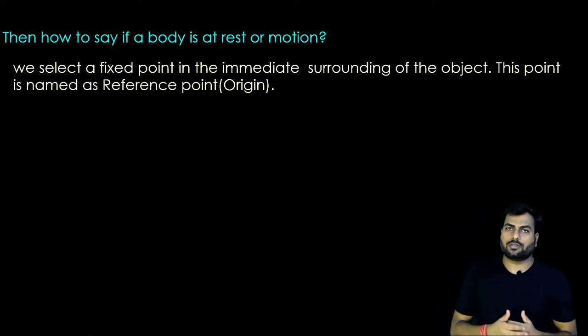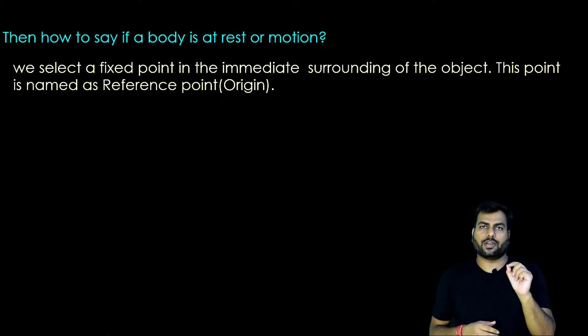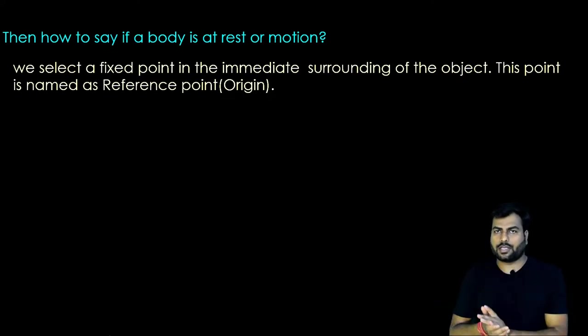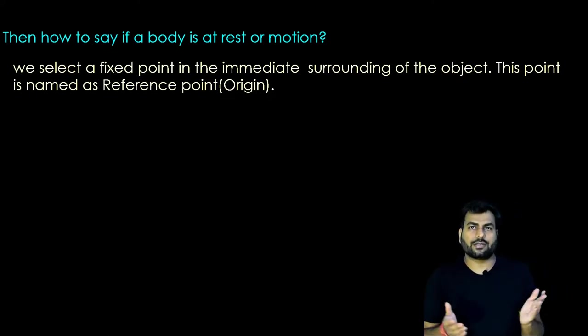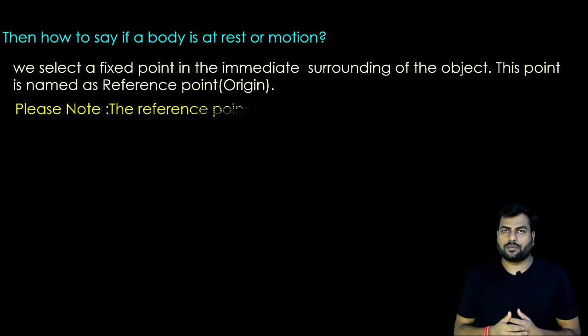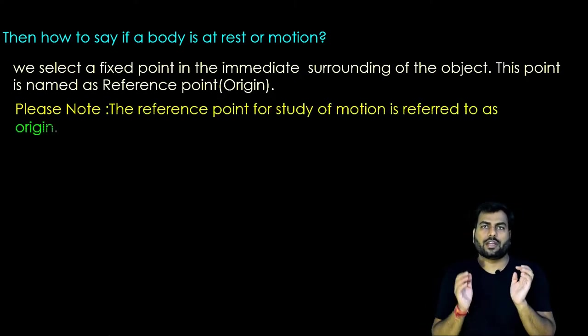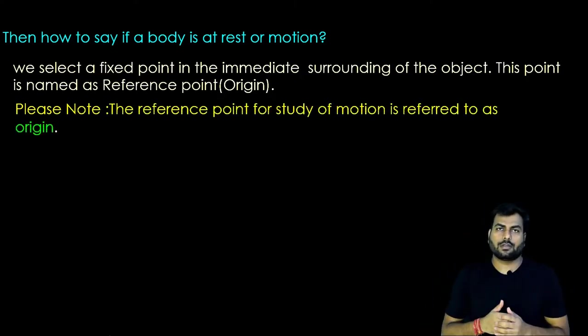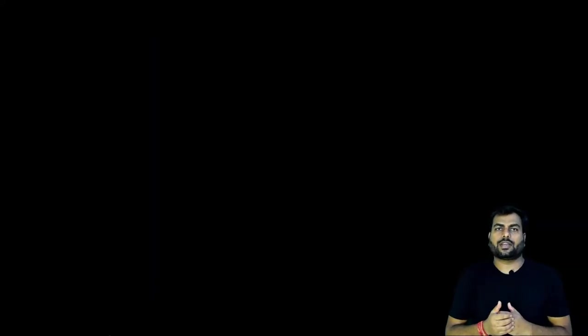Then how to say if the body is at rest or motion? As a solution, what we do is we select a fixed point in the immediate surrounding of the object, and this point is named as a reference point. So going forward, we will use this reference point to find the state of the object. Please note the reference point for the study of motion is referred to as origin.